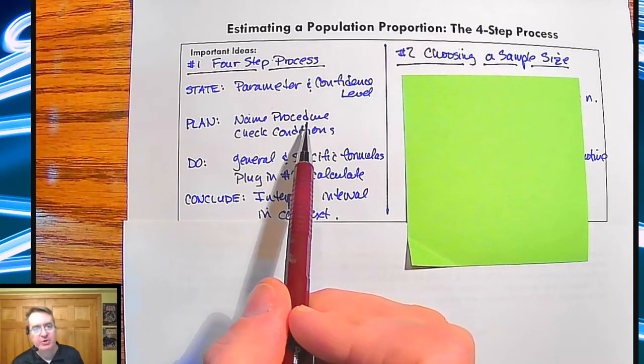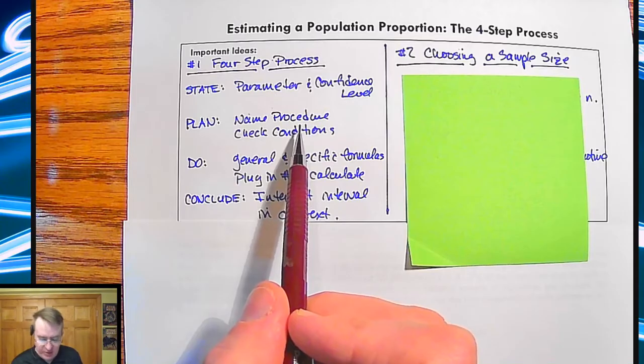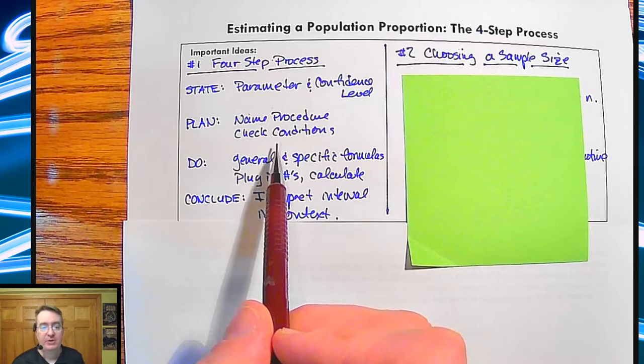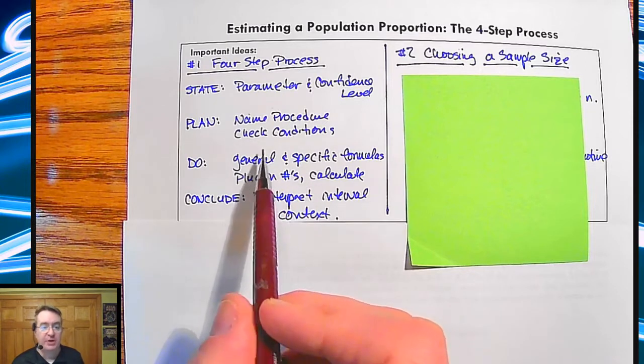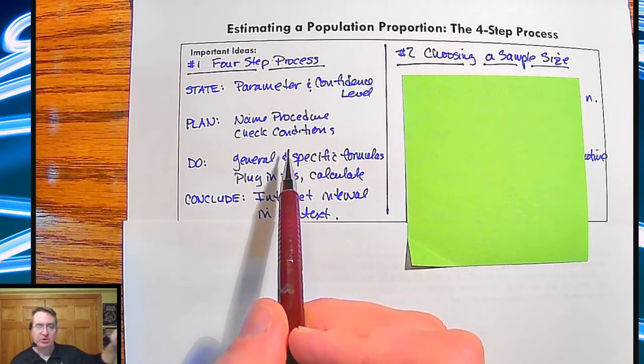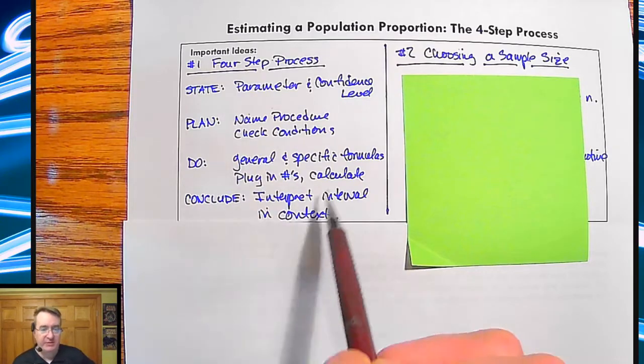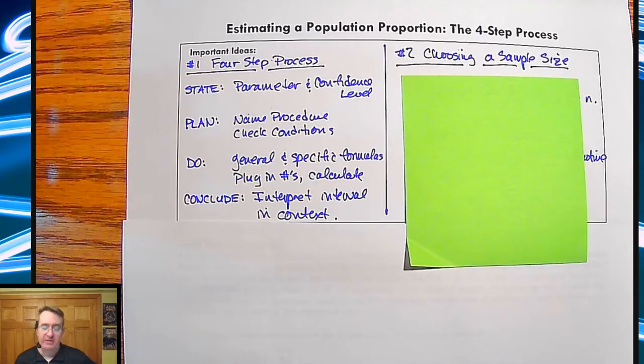The plan, we're going to name the procedure that we're going to do. So in this case here, we ended up doing a one-sample Z interval for proportions. Check your conditions. Check, check, check, check, check. And this is going to hold true for any confidence interval that we're going to do. We're going to come back to this actually in Unit 7.